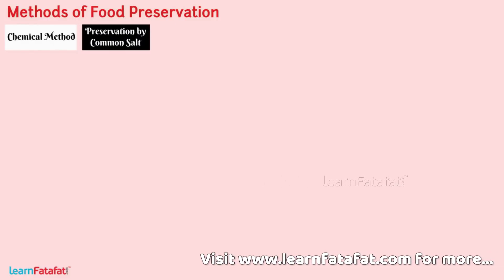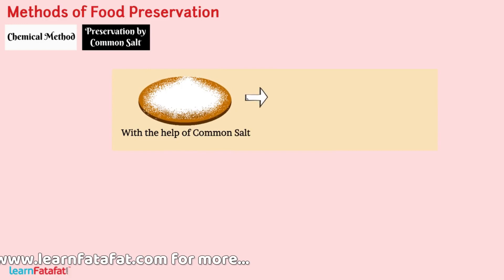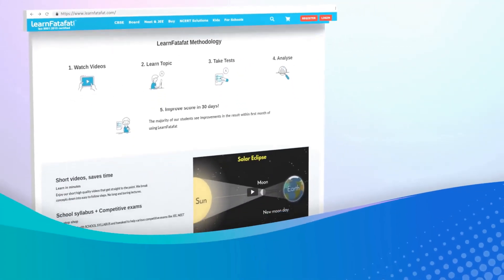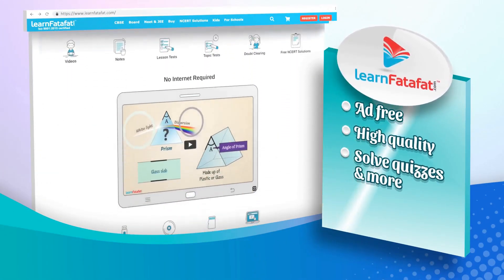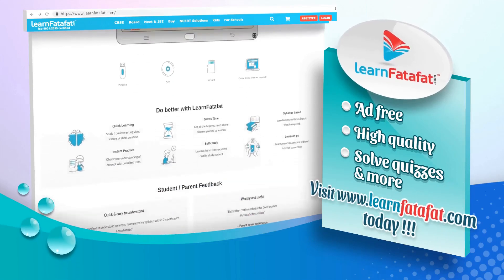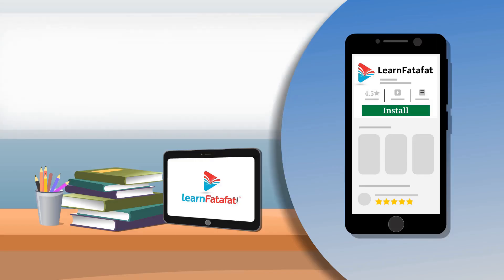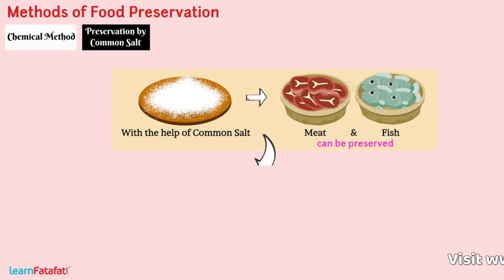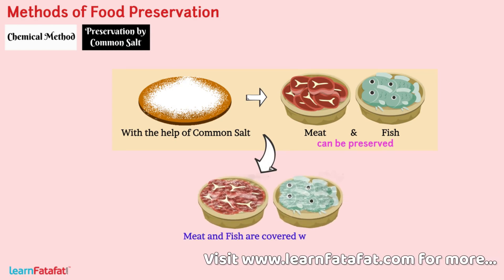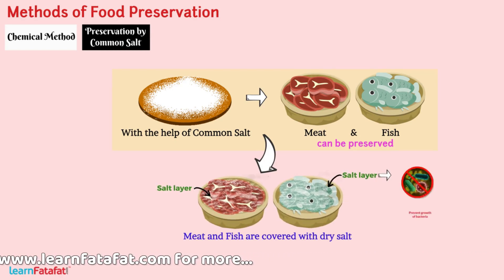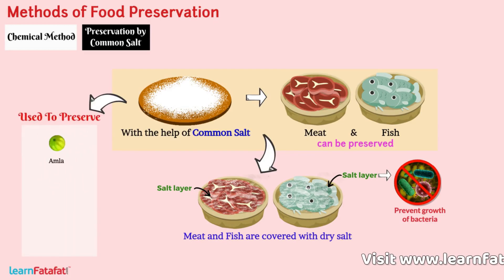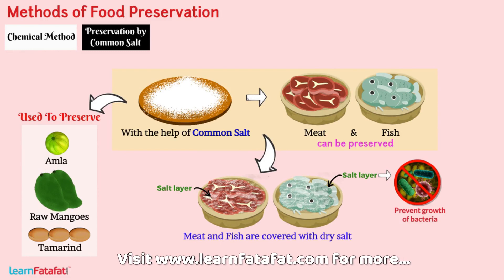Preservation by common salt. With the help of common salt, meat and fish can be preserved. Meat and fish are covered with dry salt, and this layer prevents the growth of bacteria. Common salt is also used to preserve amla, raw mangoes, tamarind, etc.